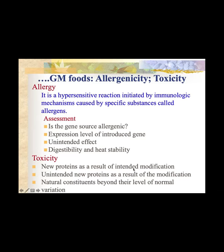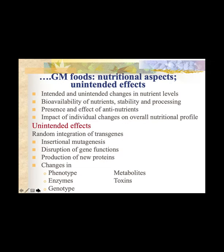For toxicity: new proteins as a result of intended modification; unintended new proteins as a result of the modification; and natural constituents beyond their level of normal variation. You have to do total biochemical analysis of the product. Intended and unintended changes in nutrient levels are very important, as is bioavailability of nutrients — how much nutrient is absorbed by the consumer. Stability and processing are also important — for example, if vitamin A is lost during cooking of golden rice, it is meaningless. The presence and effect of anti-nutrients, and the impact of individual changes on the overall nutritional profile must be assessed.